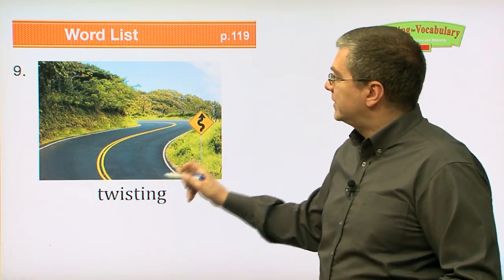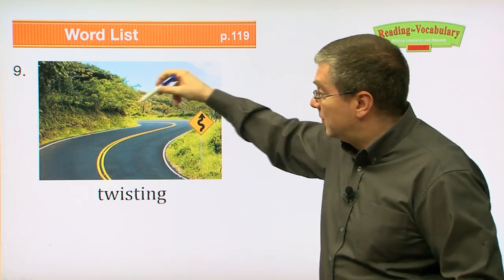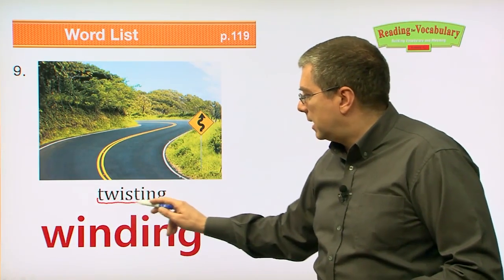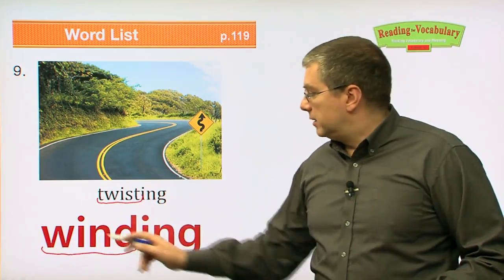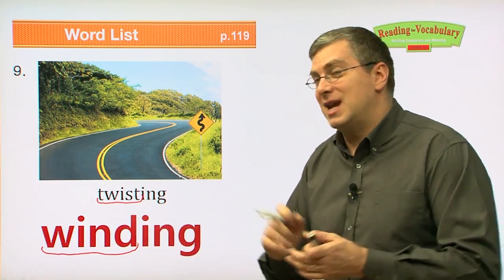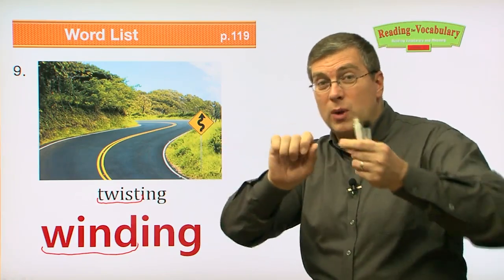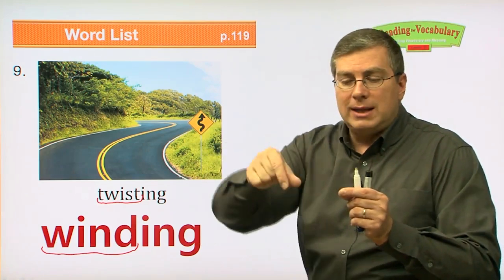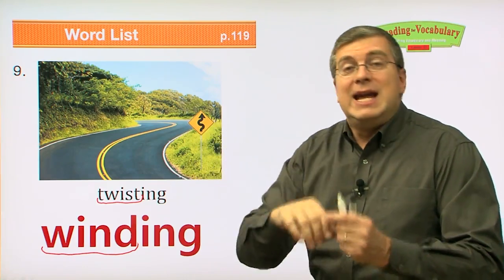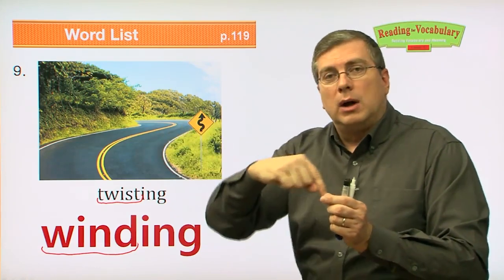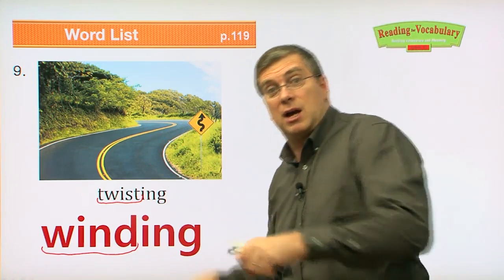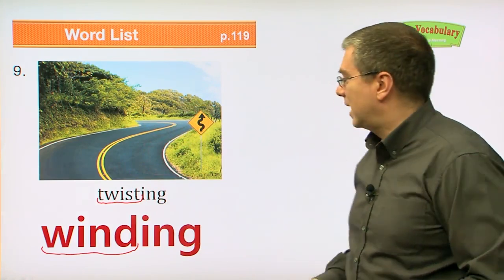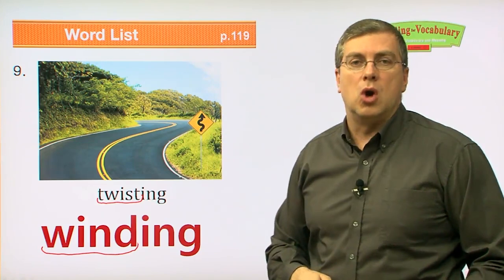Next one: twisting. Have you ever been on a road like this? A twisting road. Another word for twisting is winding. To twist and to wind are similar. Twist means to take something and turn it so it's not straight — you twist it. Wind also means to go around: you take a string and wind it around something else. It just means not straight — it's winding or twisting, like this road. It's a very fun road to ride your bike on. So twisting or winding — it's a winding road.